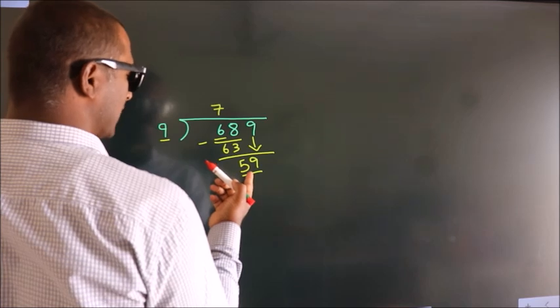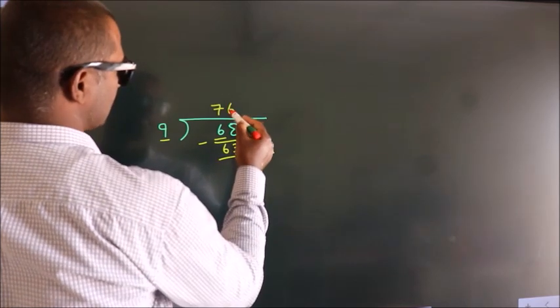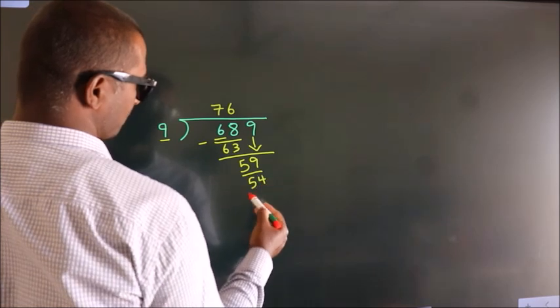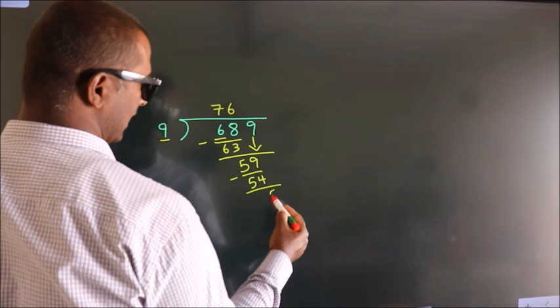A number close to 59 in the 9 table is 9 times 6, which is 54. Now we subtract, we get 5.